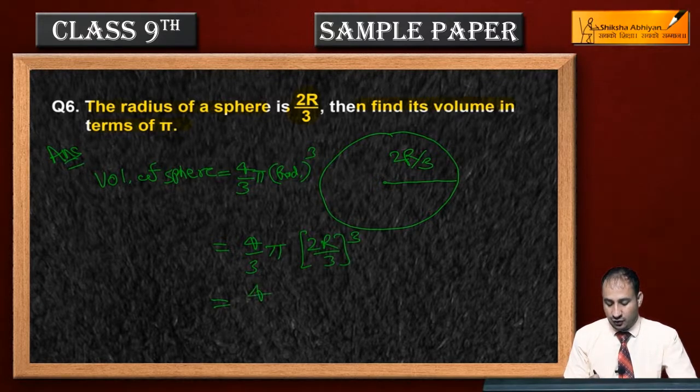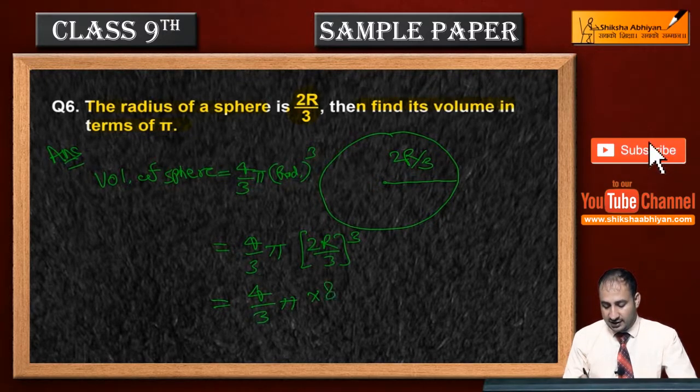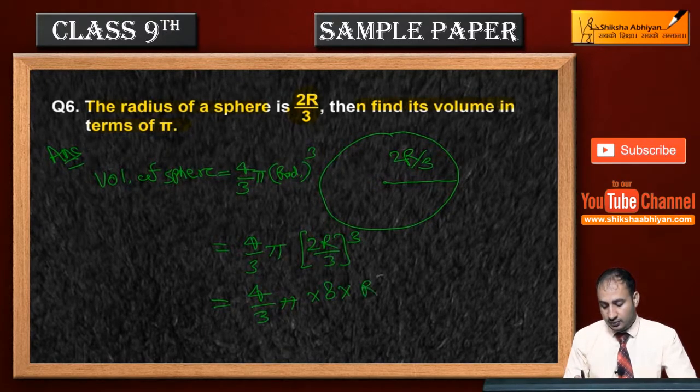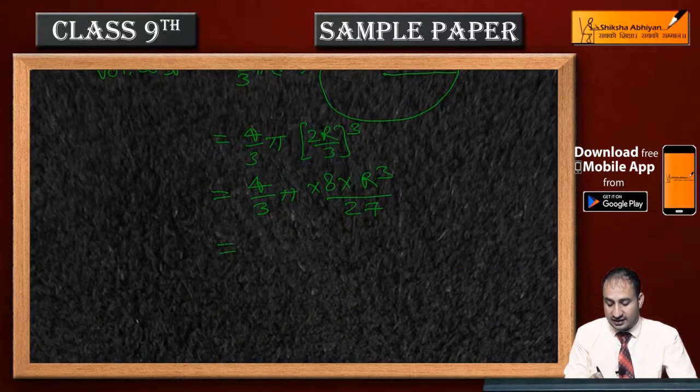And further ye kya ho jayega? This is 4 by 3 pi into 2 ka cube. 8 ho jayega. Into r ka cube. R cube. 3 ka cube is 27. Ise calculate kya karenge?